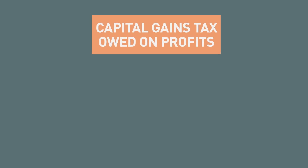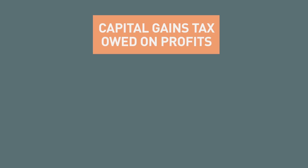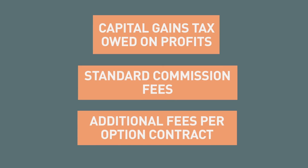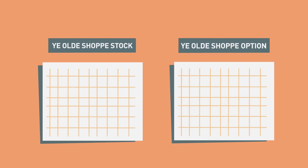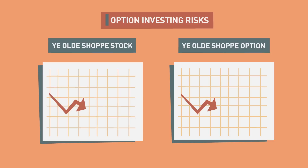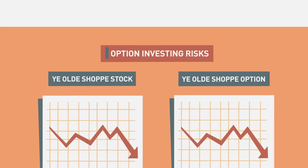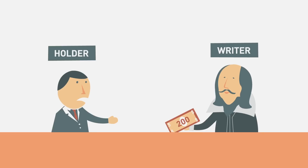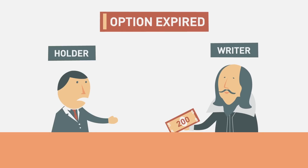Keep in mind that any profit made on options investing will result in capital gains taxes owed. Also, options aren't free — in addition to a commission fee, many brokerage firms charge a separate contract fee per option purchased, exercised, or sold. Since options are tied to the value of their underlying security, option investors should understand the risks that accompany them. Extremely volatile stocks will in turn have extremely volatile option price movements. Also, even though a call option's downside risk is limited, investors can still end up losing their entire investment if the call expires unsold or unexercised.